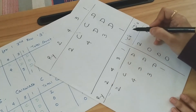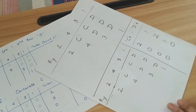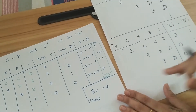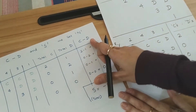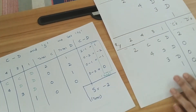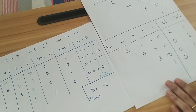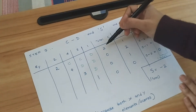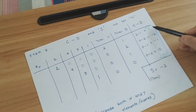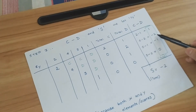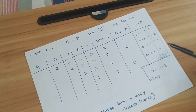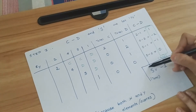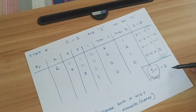Now we calculate C minus D for each row. Row 1: 2C − 1D = 1. Row 2: 0C − 2D = −2. Row 3: 0C − 1D = −1. The last row is zero. We add all these values to get the S value, and S = −2.